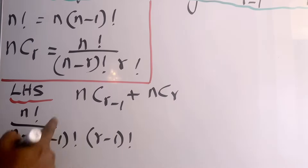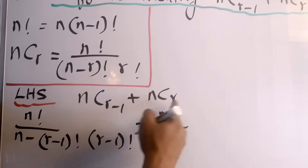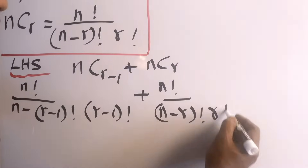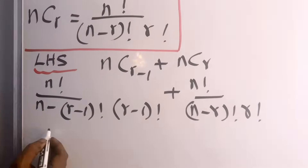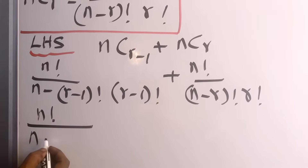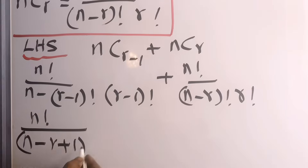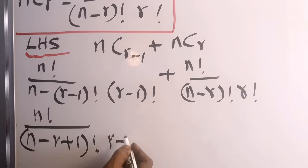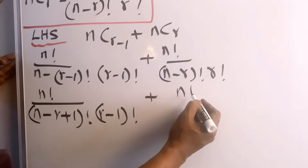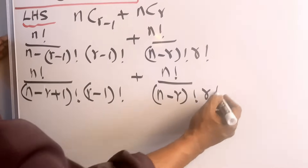And nCr equals n factorial over (n-r) factorial times r factorial. Removing the bracket in the first term gives n factorial over (n-r+1) factorial times (r-1) factorial, plus n factorial over (n-r) factorial times r factorial.